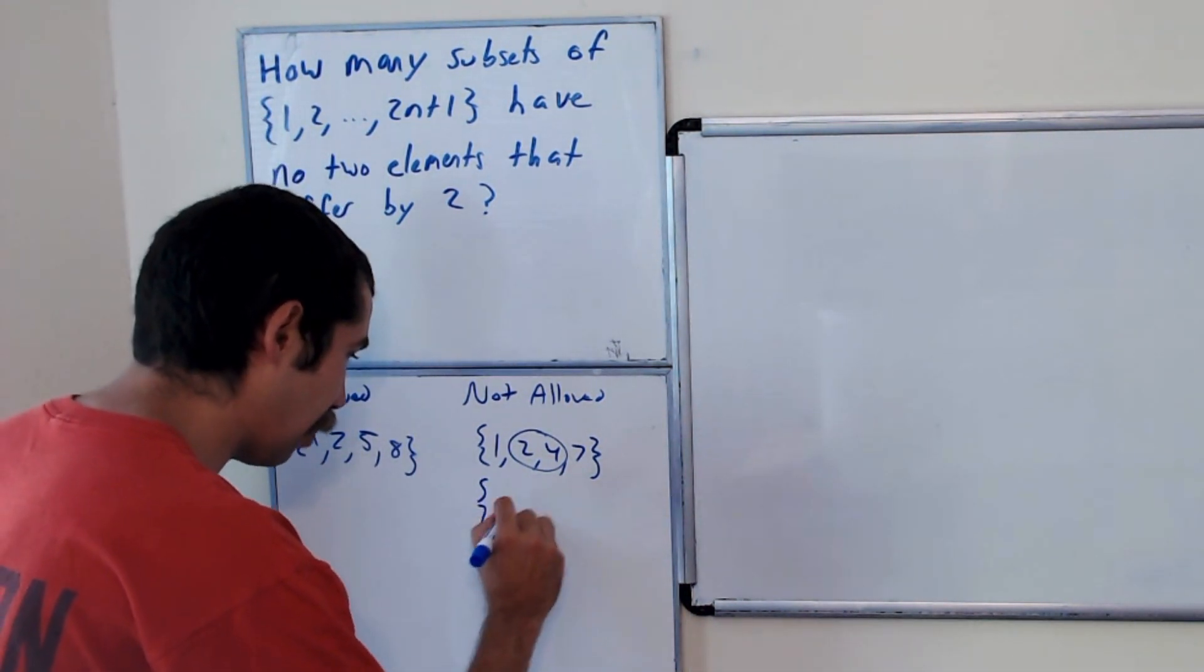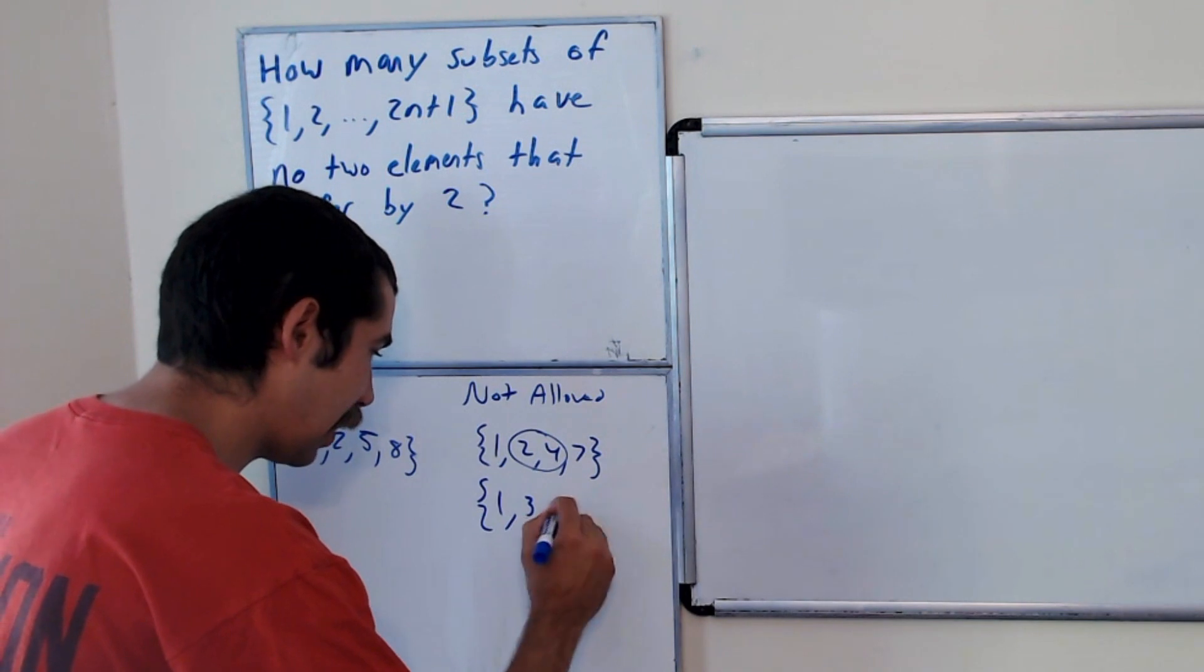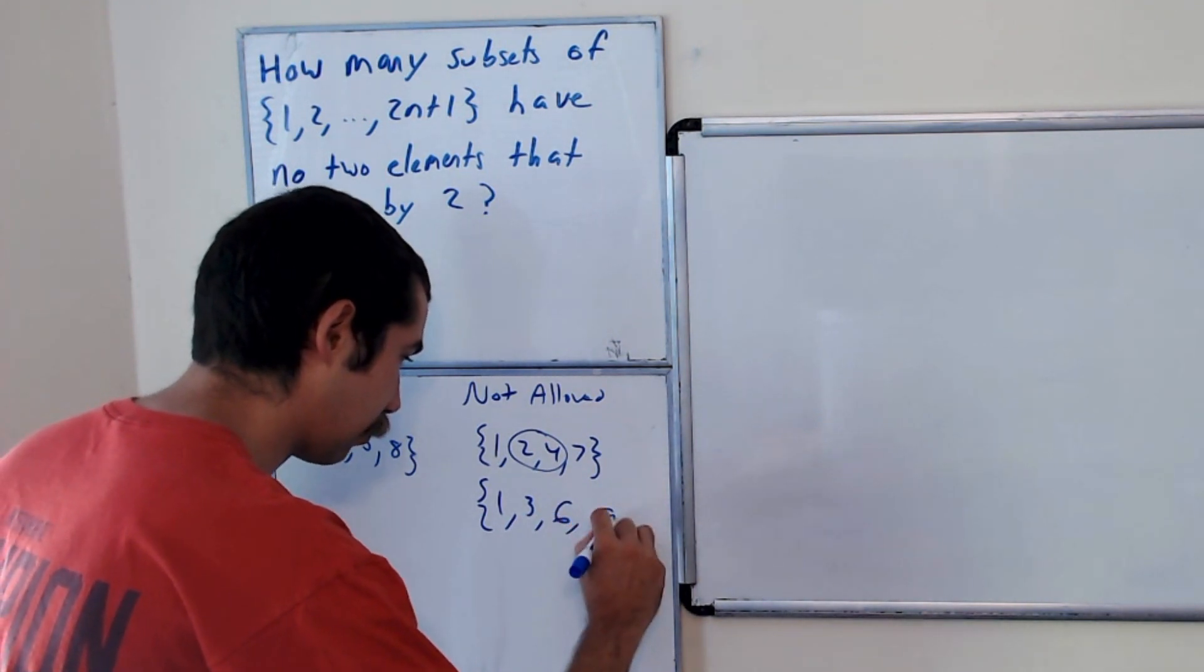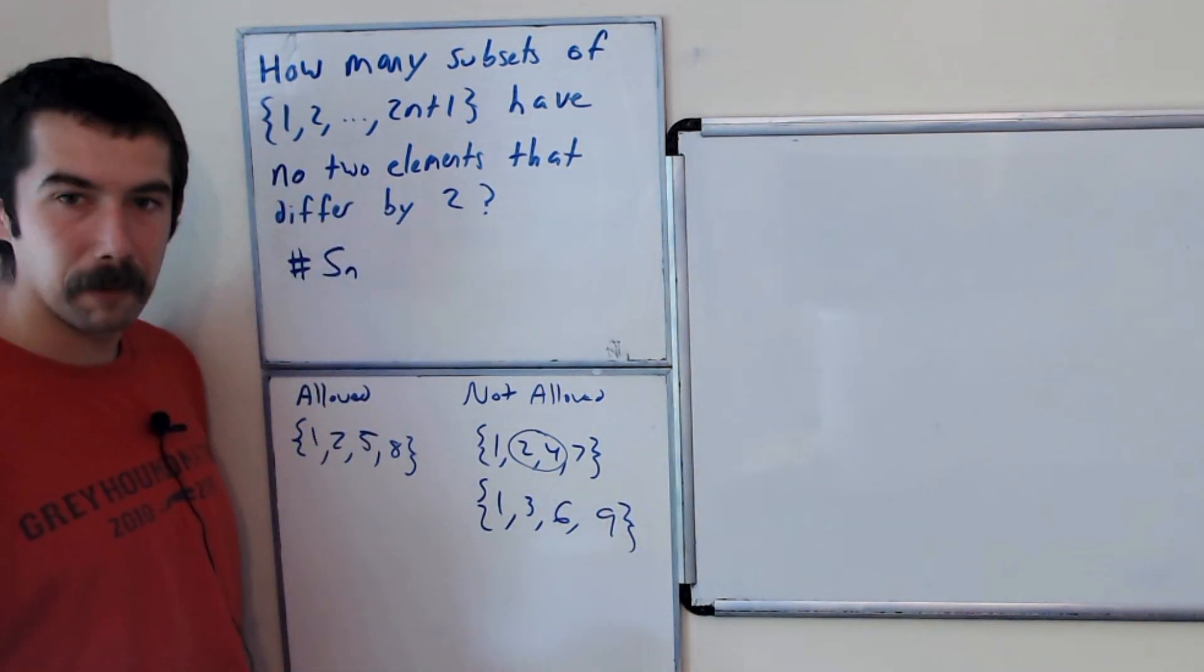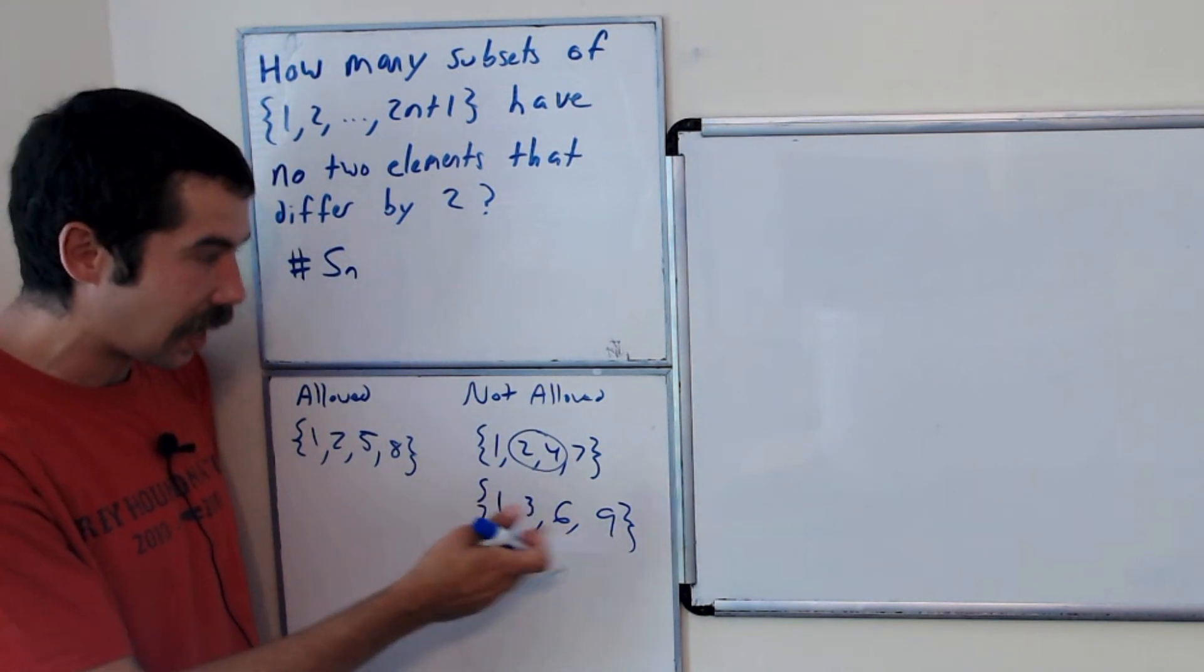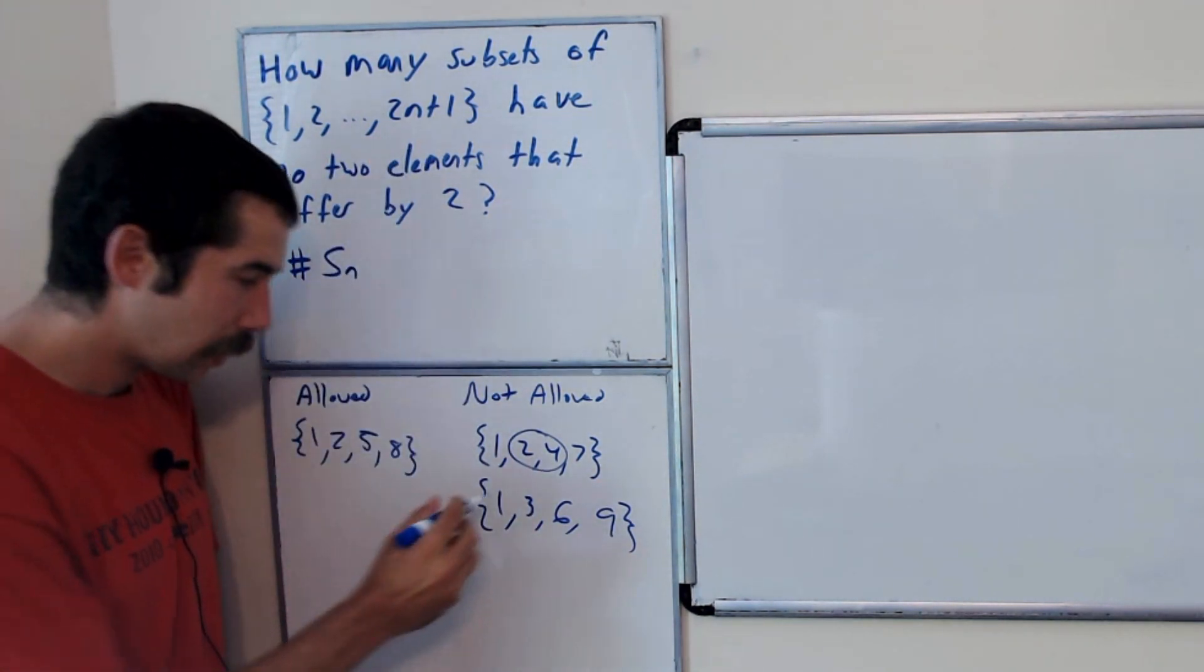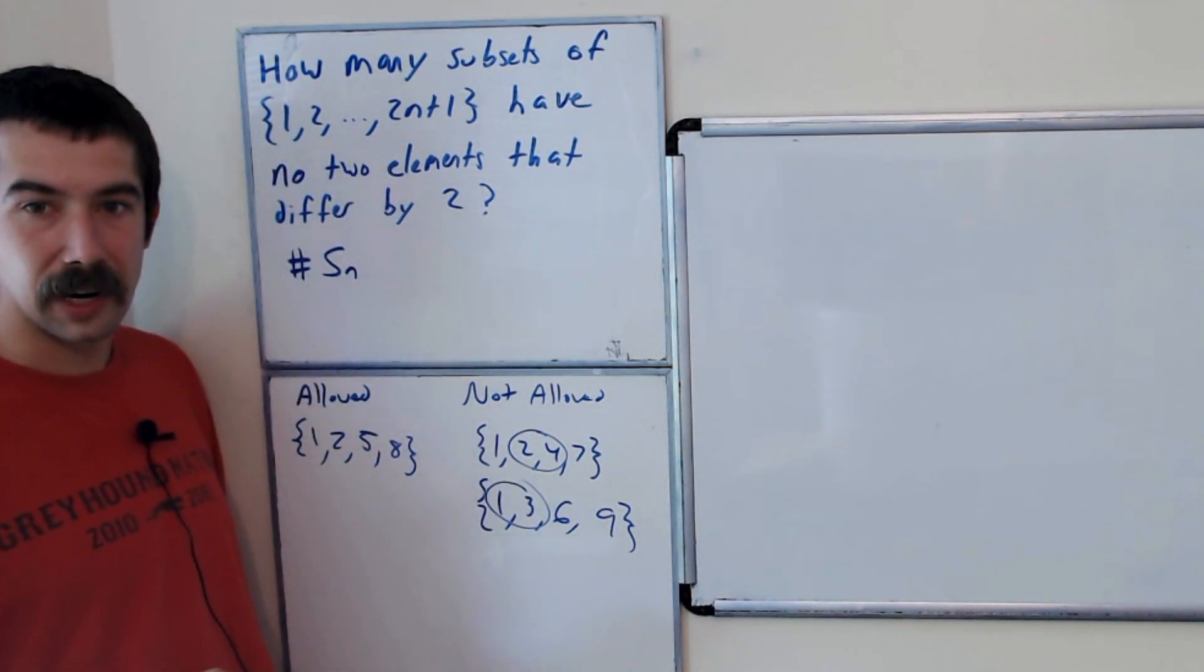And another example of one that's not allowed would be 1, 3, 6, 9. And why is this set not counted in the problem? Well, 1 and 3 are next to each other.